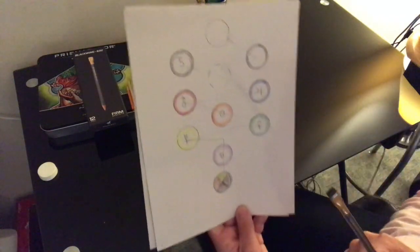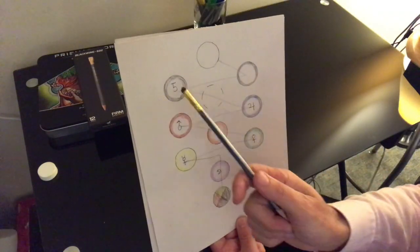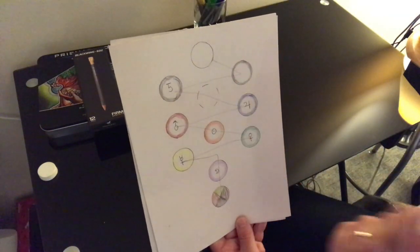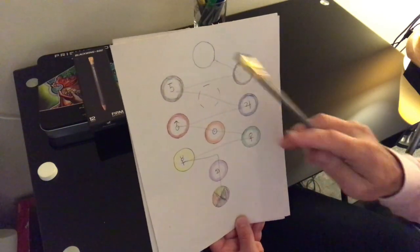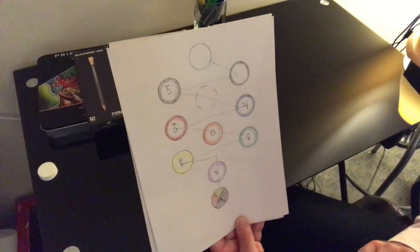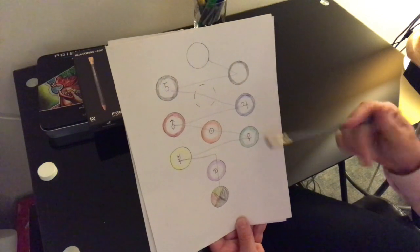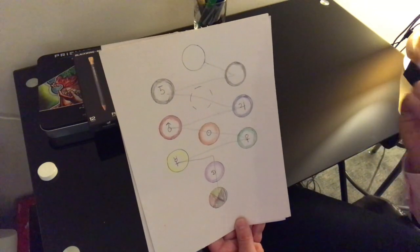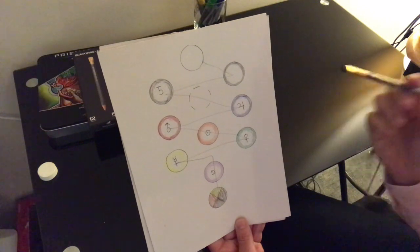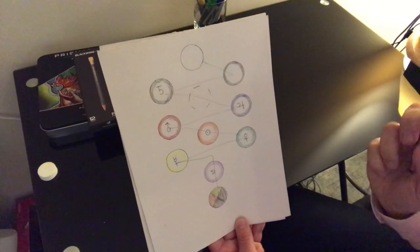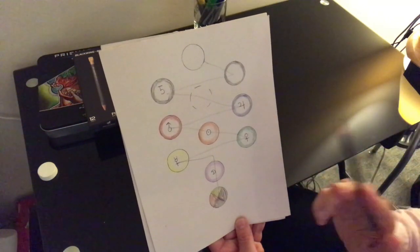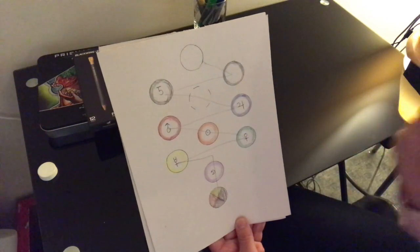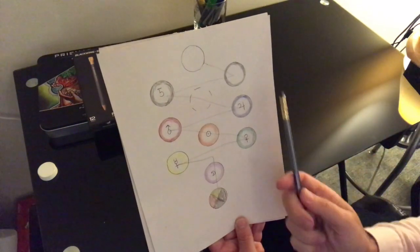So if you have Aquarius as your Moon sign, your birth angel, you can work - and a lot of systems say start out working with Kassiel because Uriel can be very challenging. But the way I was taught is that Uriel can be challenging for people who don't have him as their birth angel. So if your Moon is in Aquarius, you're probably safe to work with Uriel.